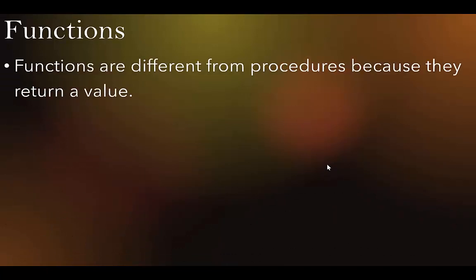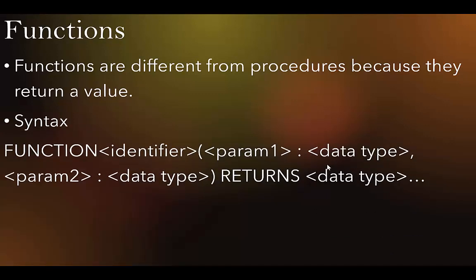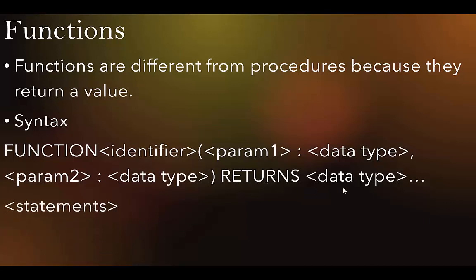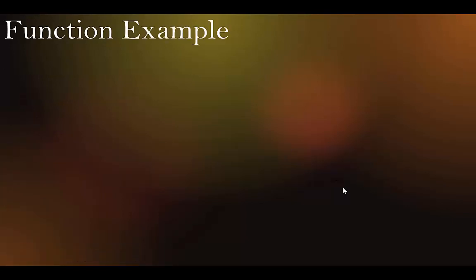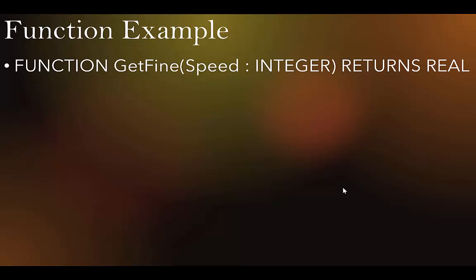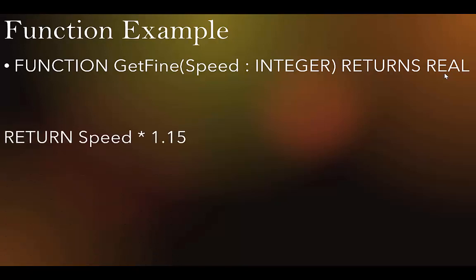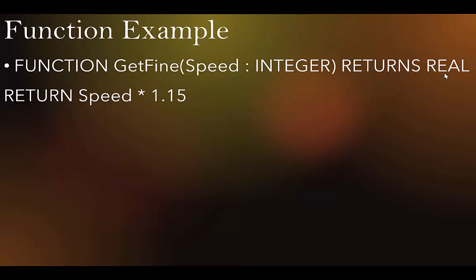Functions are different from procedures because they return a value. Syntax: FUNCTION name(parameter : DataType) RETURNS DataType — statement — ENDFUNCTION. The extra keyword is RETURNS, followed by the data type being returned. Example: FUNCTION get_fine(speed : INTEGER) RETURNS REAL — RETURN speed * 1.15 — ENDFUNCTION.